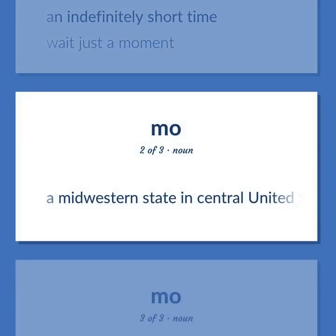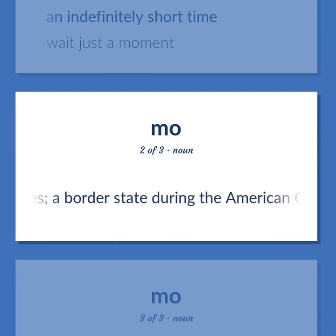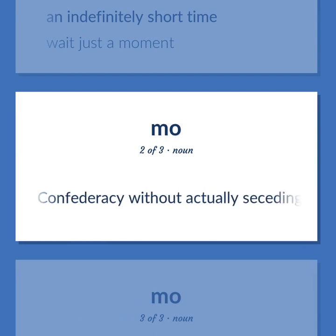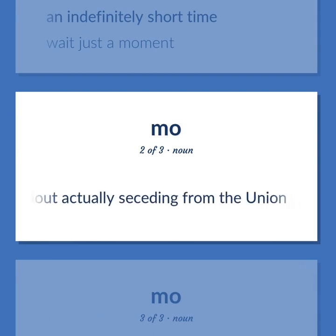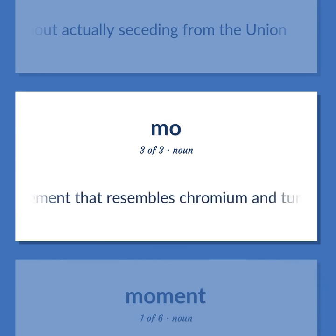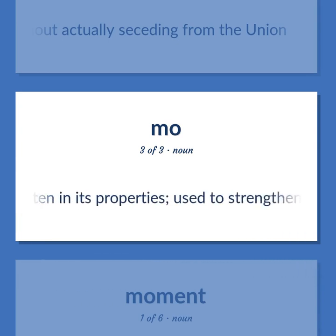Missouri: A midwestern state in central United States. A border state during the American Civil War. Missouri was admitted to the Confederacy without actually seceding from the Union. Molybdenum: A polyvalent metallic element that resembles chromium and tungsten in its properties, used to strengthen and harden steel.